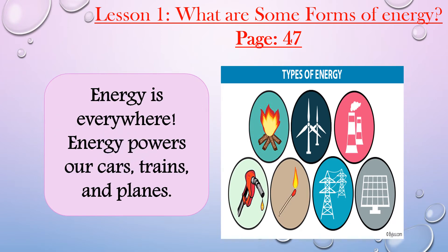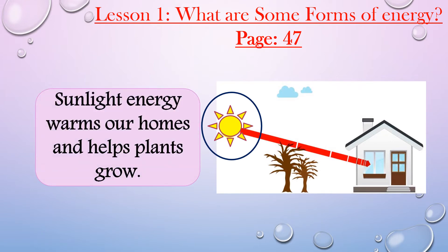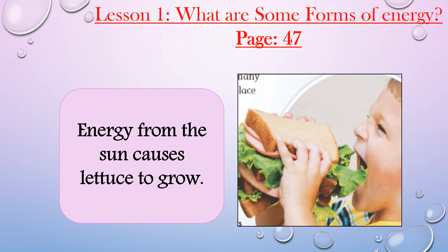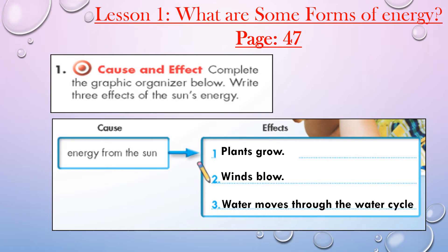Energy is everywhere — energy powers our cars, trains, and planes. Sunlight energy warms our homes and helps plants to grow. Open your textbook to page 47 and answer question number one: complete the graphic organizer — write three effects of the sun's energy. Number one: plants grow. Number two: winds blow. Number three: water moves through the water cycle.